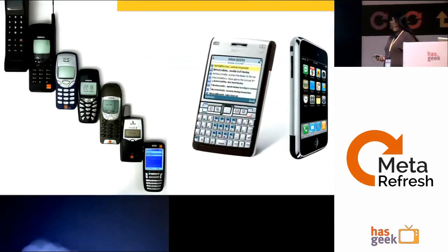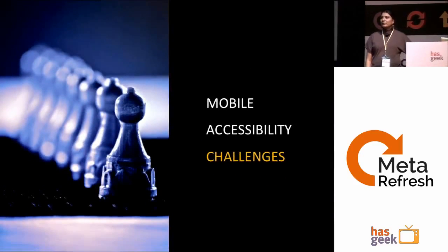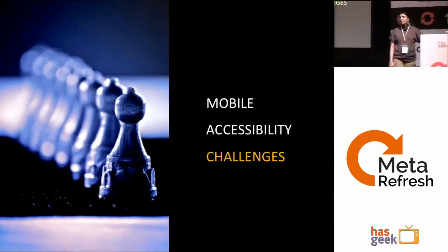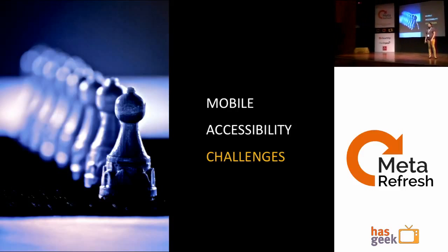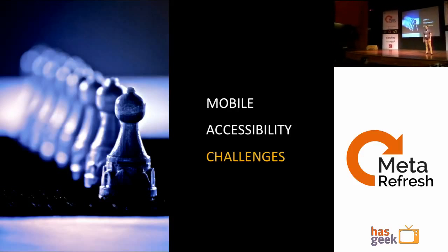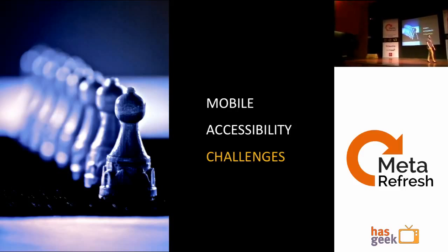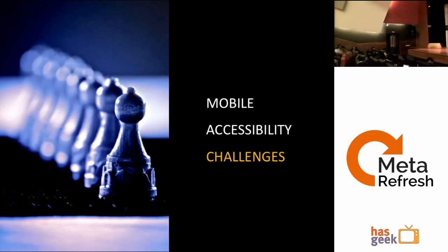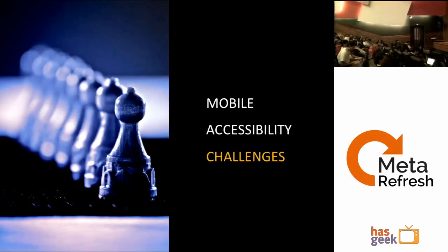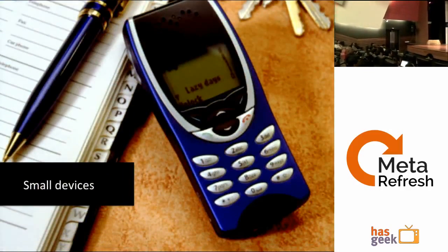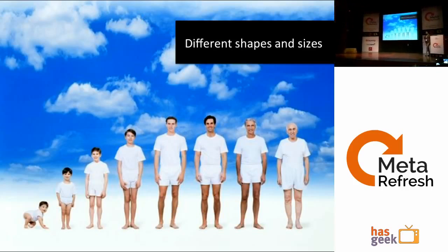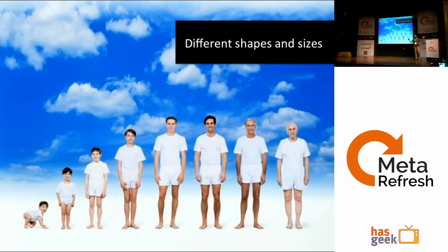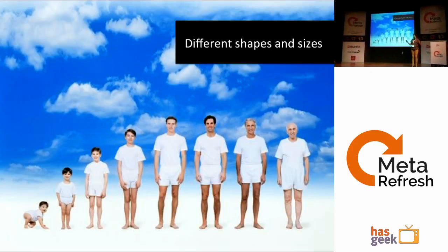What are the different types of challenges? First is the small device — this covers screen size. The second challenge is that mobiles come in all different shapes and sizes, from the smallest phone to the biggest tablet. That is the biggest challenge — making sure my application is accessible across all of them.